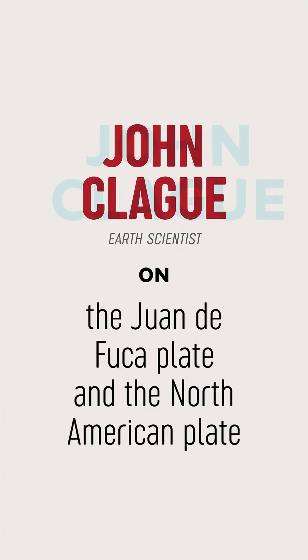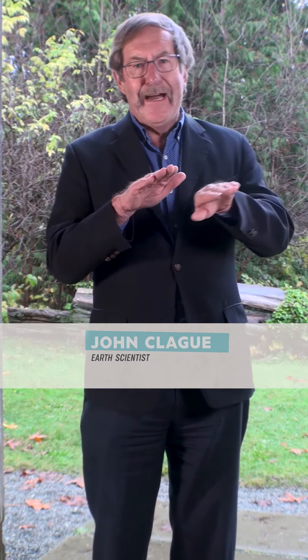Right off our coast in Canada, two plates are colliding with one another. We live here in Vancouver on what's referred to as the North American plate, right at the edge of that plate. To the west, beneath the ocean floor, is a smaller plate called the Juan de Fuca plate, and it's colliding with the North American plate. Because North America is more buoyant than this oceanic plate, the oceanic plate is going down beneath North America — and that's relevant because it's exerting forces responsible for the earthquakes along the Pacific Coast.